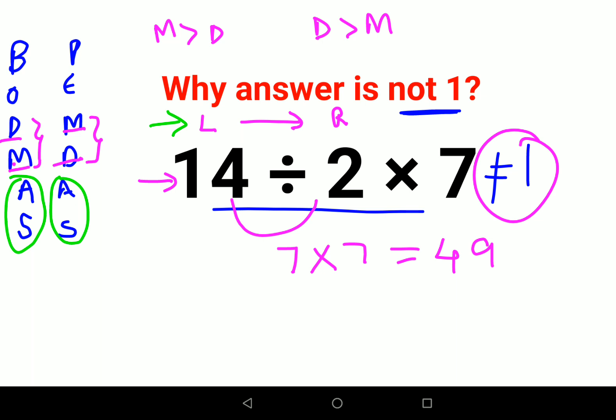But what happens in this case is when there is a multiplication-division situation, a lot of people get confused and they end up doing what is easier. So they thought that 14 divided by 2 into 7... they do 2 into 7 which is 14, so 14 divided by 14, and that is where you get the answer as 1, which is not correct.